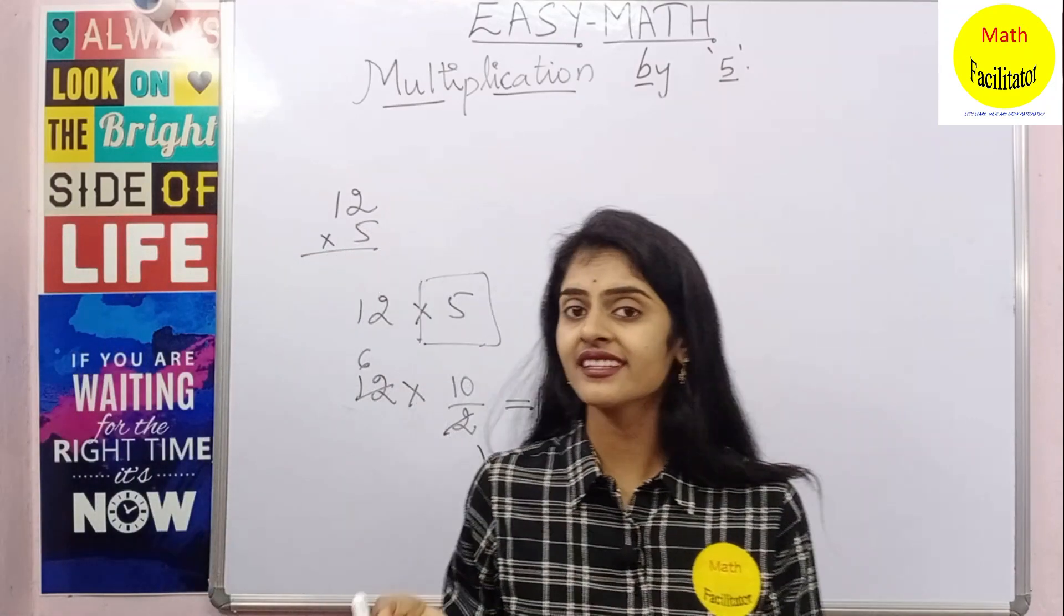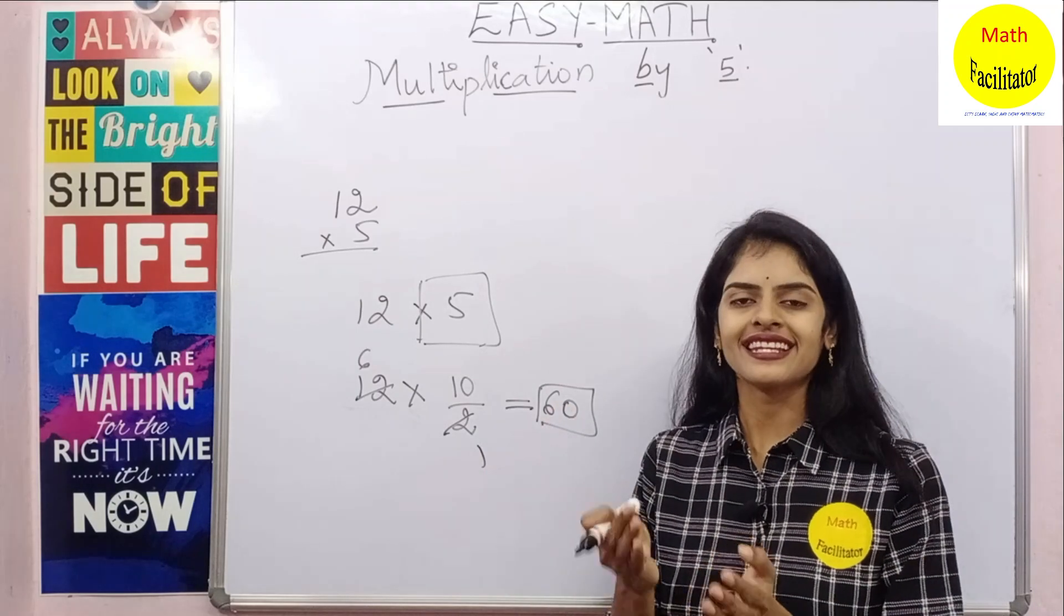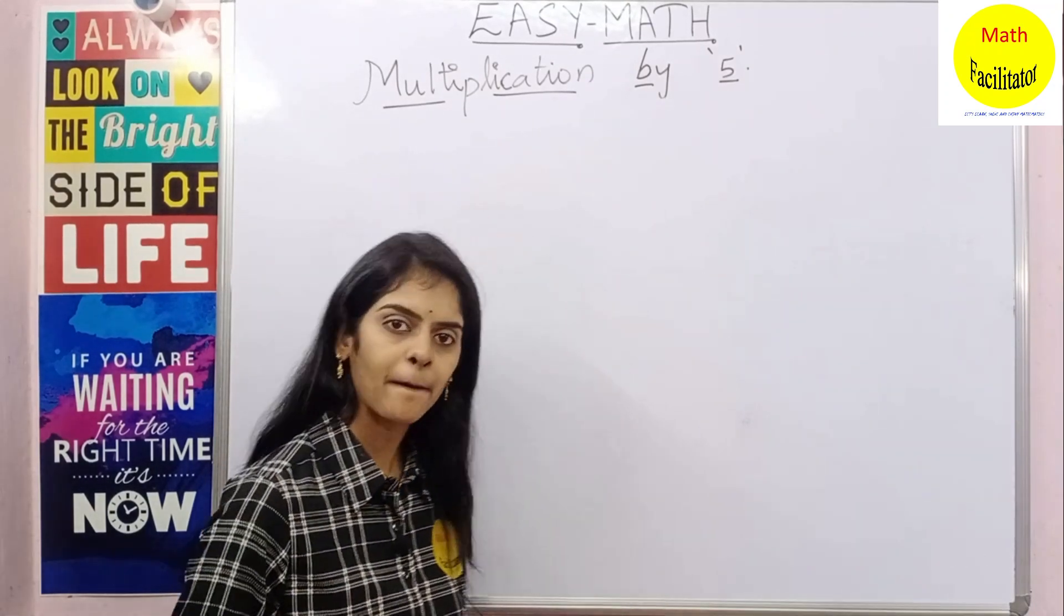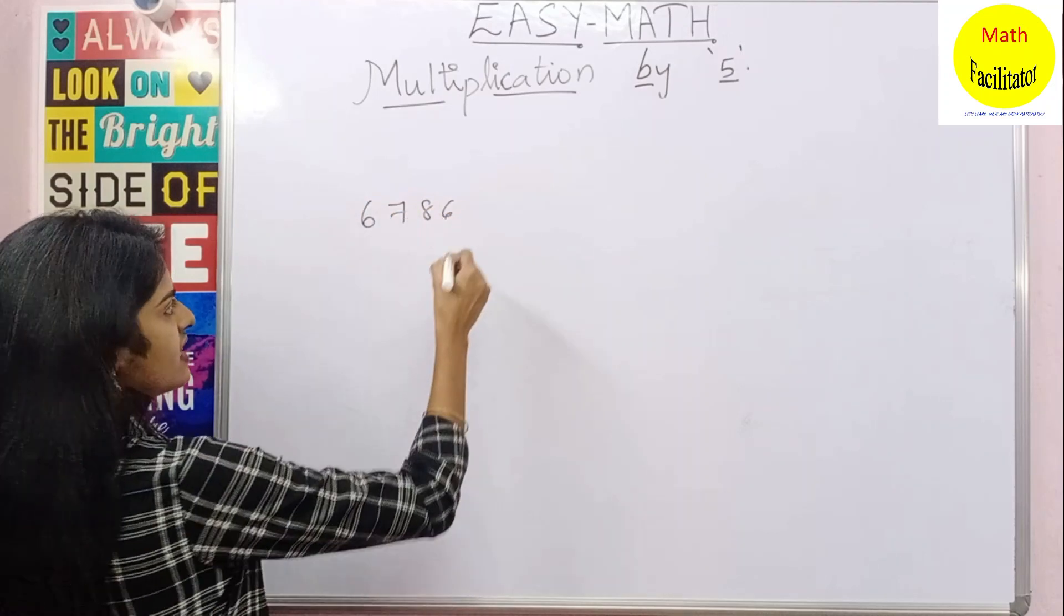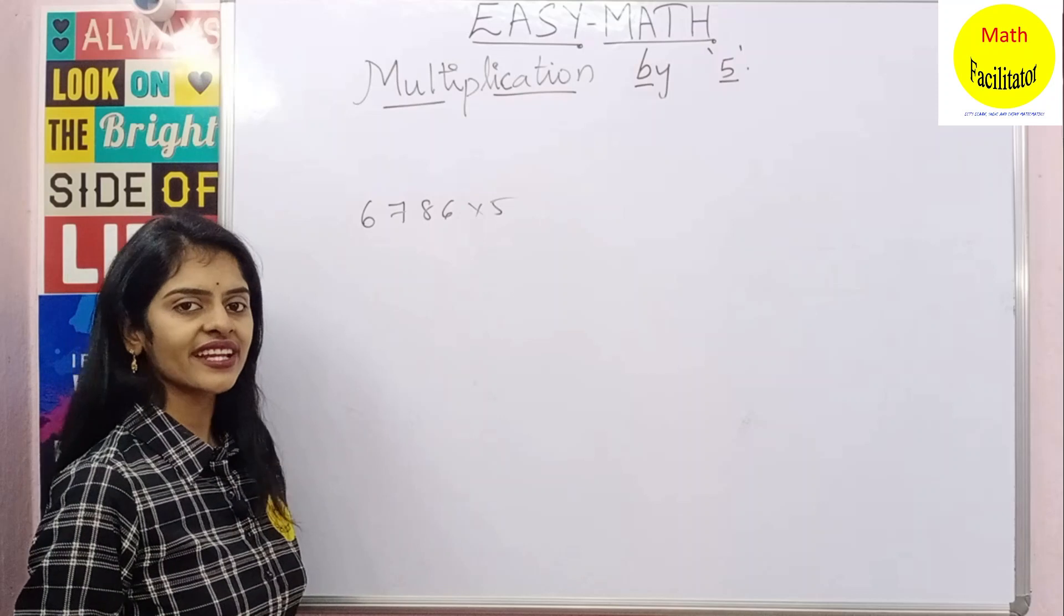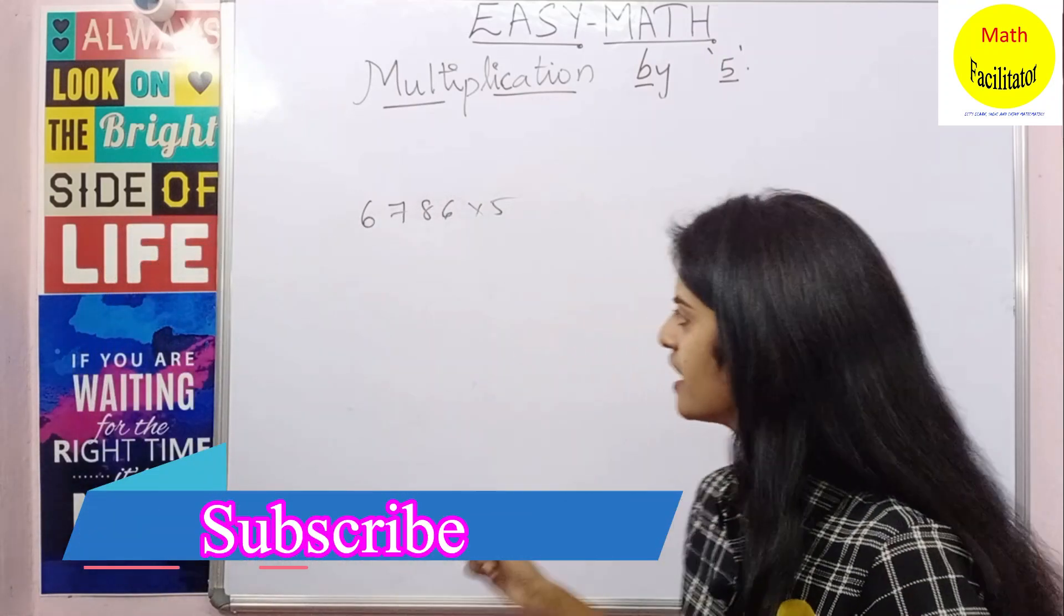So now coming to larger numbers, you will find the technique very useful. Let us see now. Let us take a bigger number, for example, 6786 into 5.